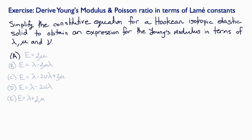Did you get A, that E equals 2 mu; B equals lambda minus 2 mu lambda; C equals lambda minus 2 nu lambda plus 2 mu; D equals lambda minus 2 nu lambda; or E, E equals lambda plus 2 mu?